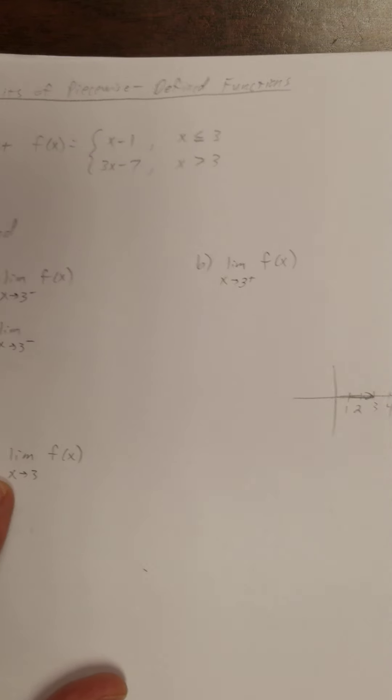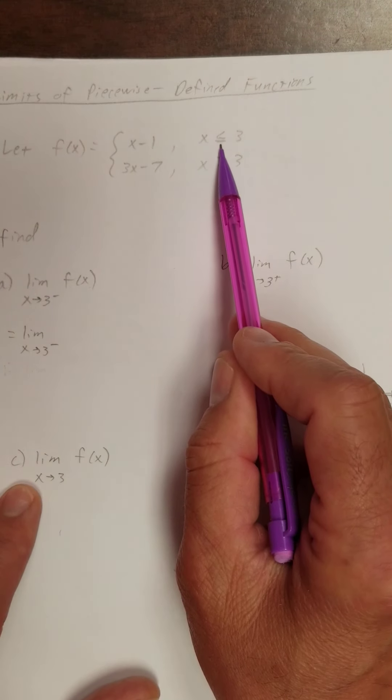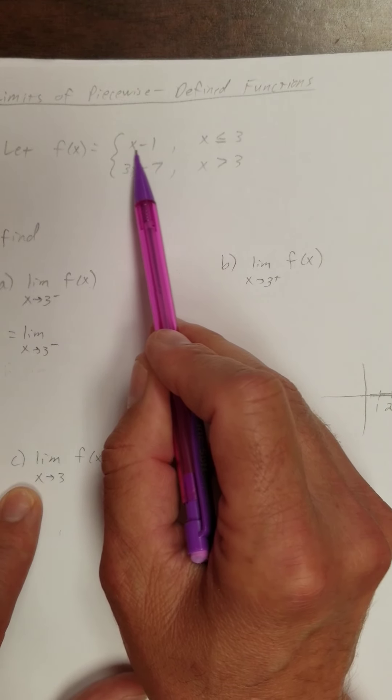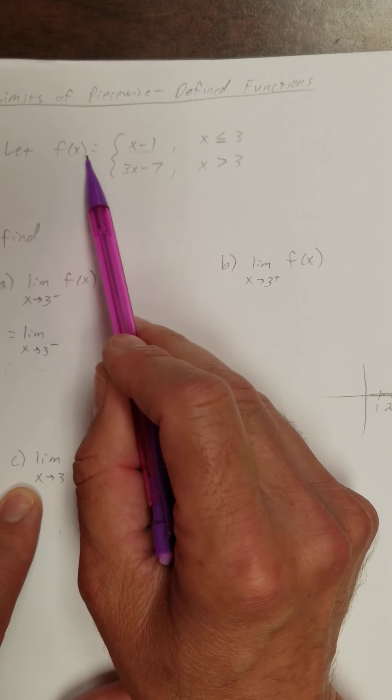So I'm looking at values that are less than 3, values of x that are less than 3. So I'm going to use this piece of my function for f(x).